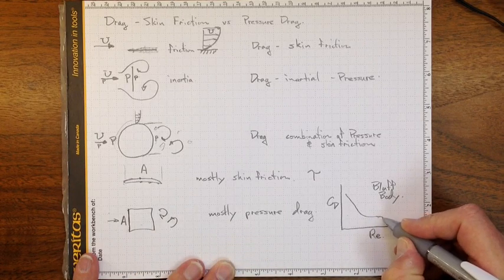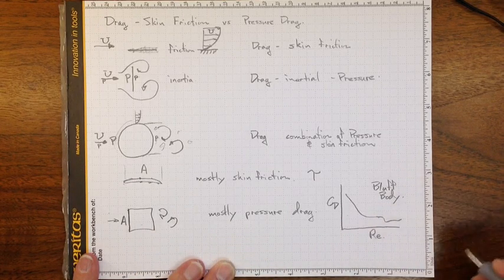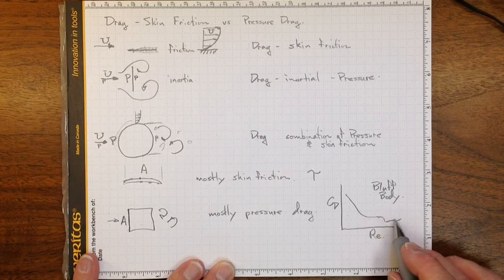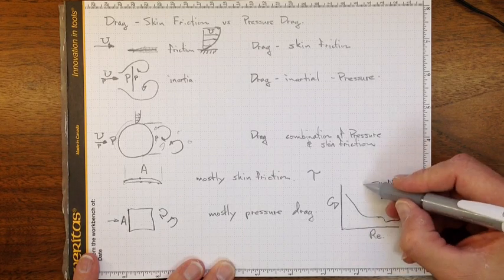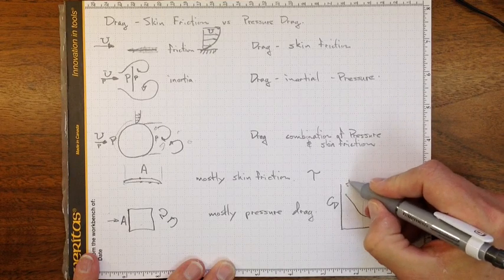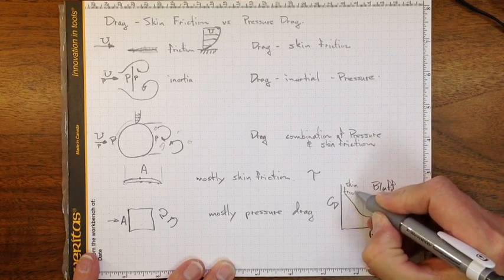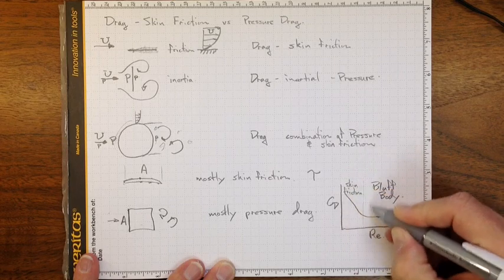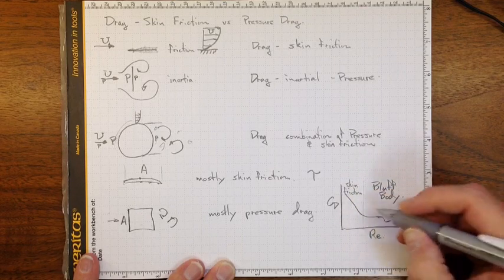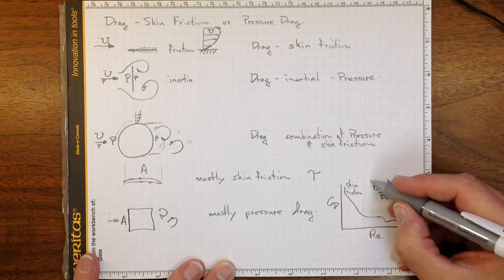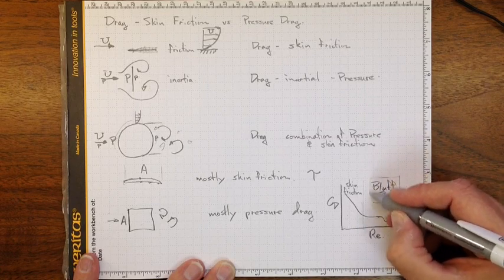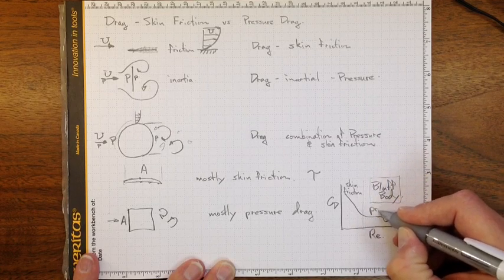And sometimes we'll see some other behavior further out here. In this region here at low Reynolds numbers, that's where we're dominated by skin friction. And as we increase in Reynolds number, here we're starting to get into bluff body pressure dominated drag.